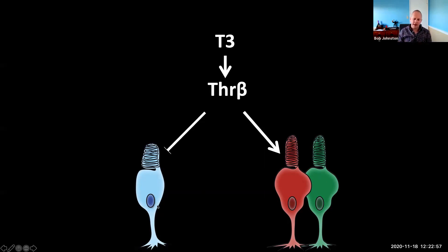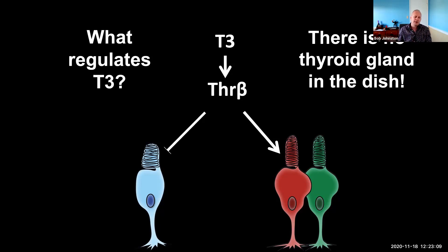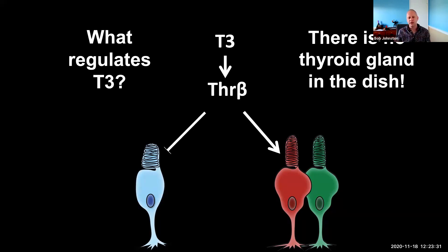The next question was: where is this T3 coming from? It's a thyroid hormone, but there's no thyroid gland in the dish. What we realized is there are very scant levels of T4 (the inactive form) and T3 (the active form) in the media. The fact that our wild-type organoids could change these levels to give these outcomes suggested that the retina itself must be controlling the levels of thyroid hormone signaling. To address this, Kiara teamed up with another talented grad student, Sarah Hadniak, and together they did a long time series of bulk RNA-seq of organoids across development.